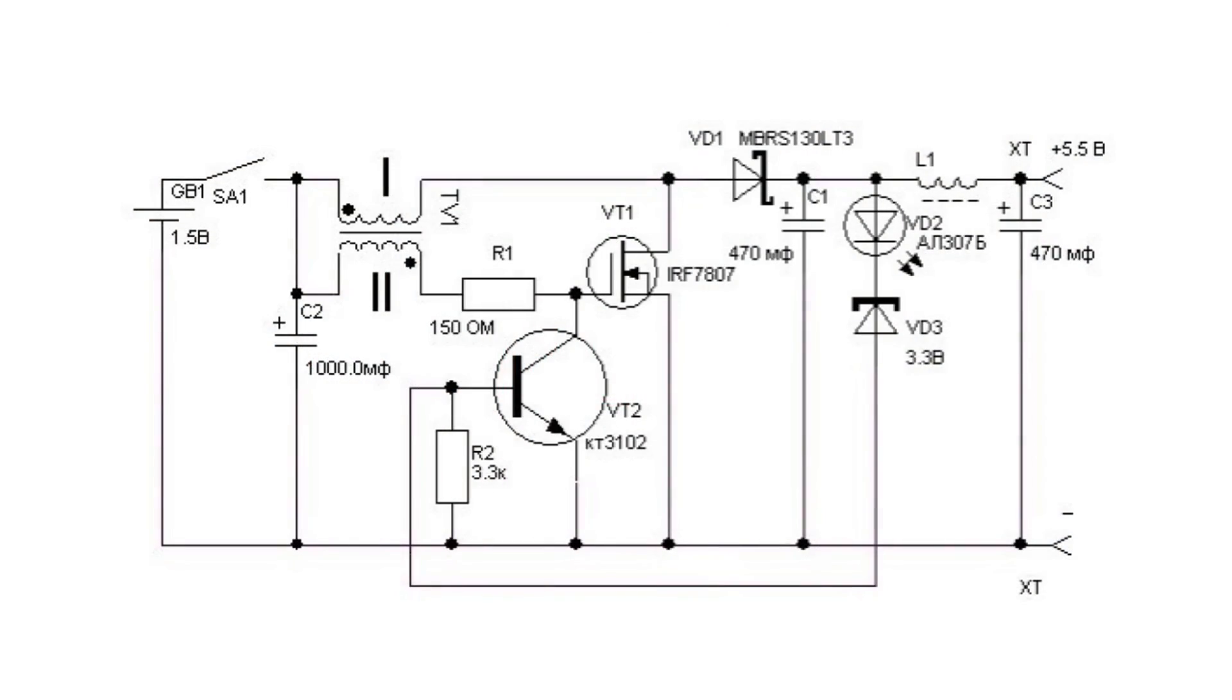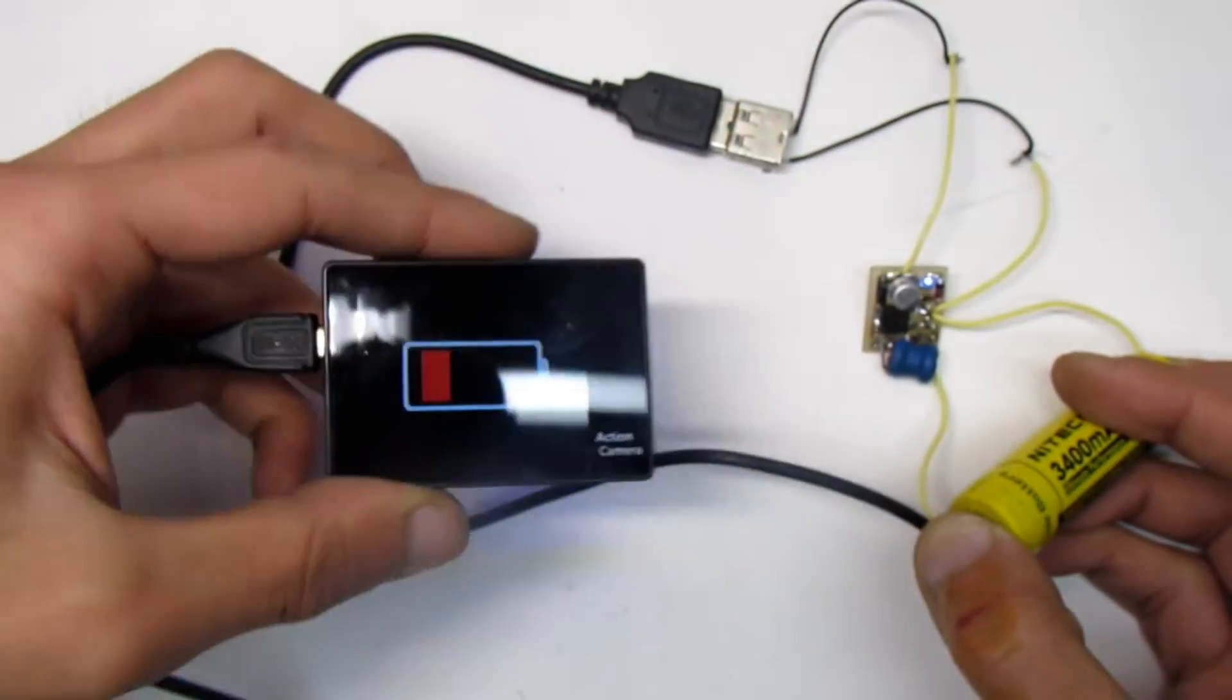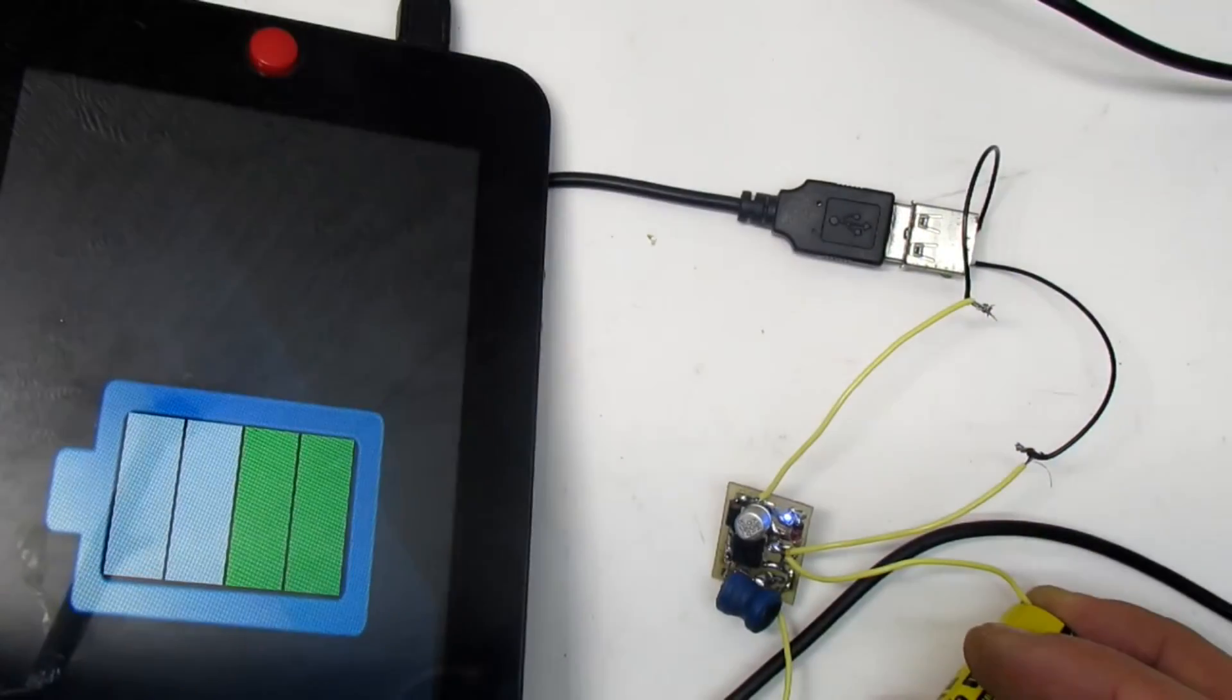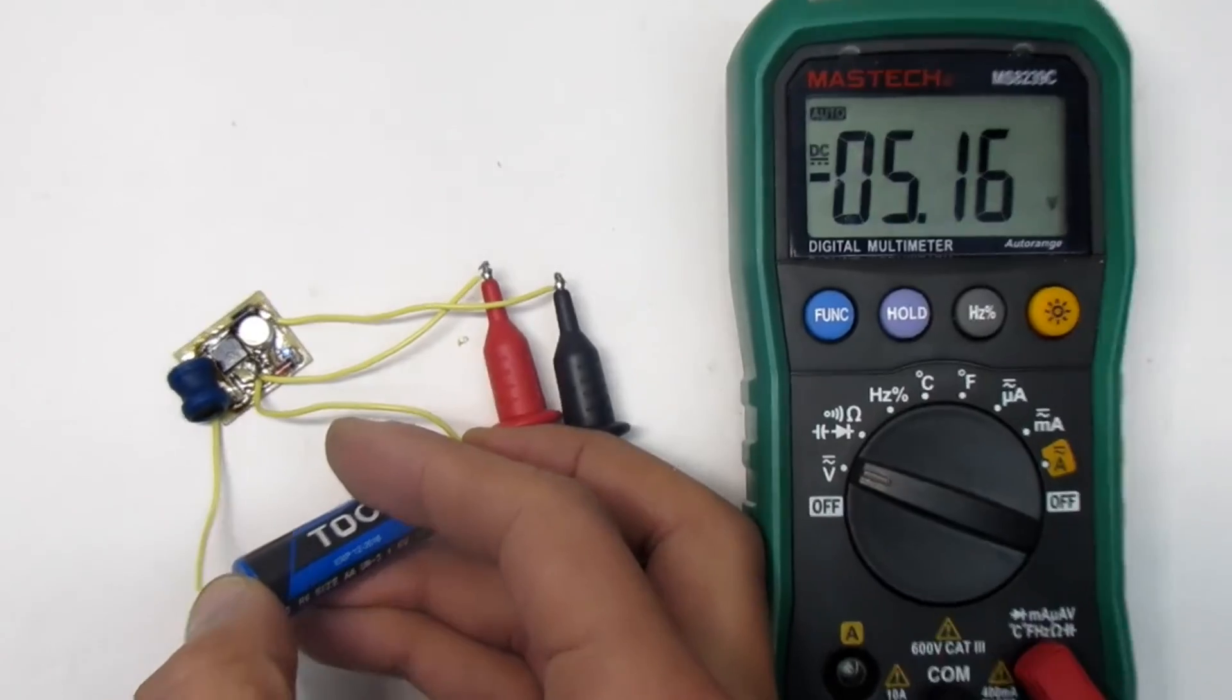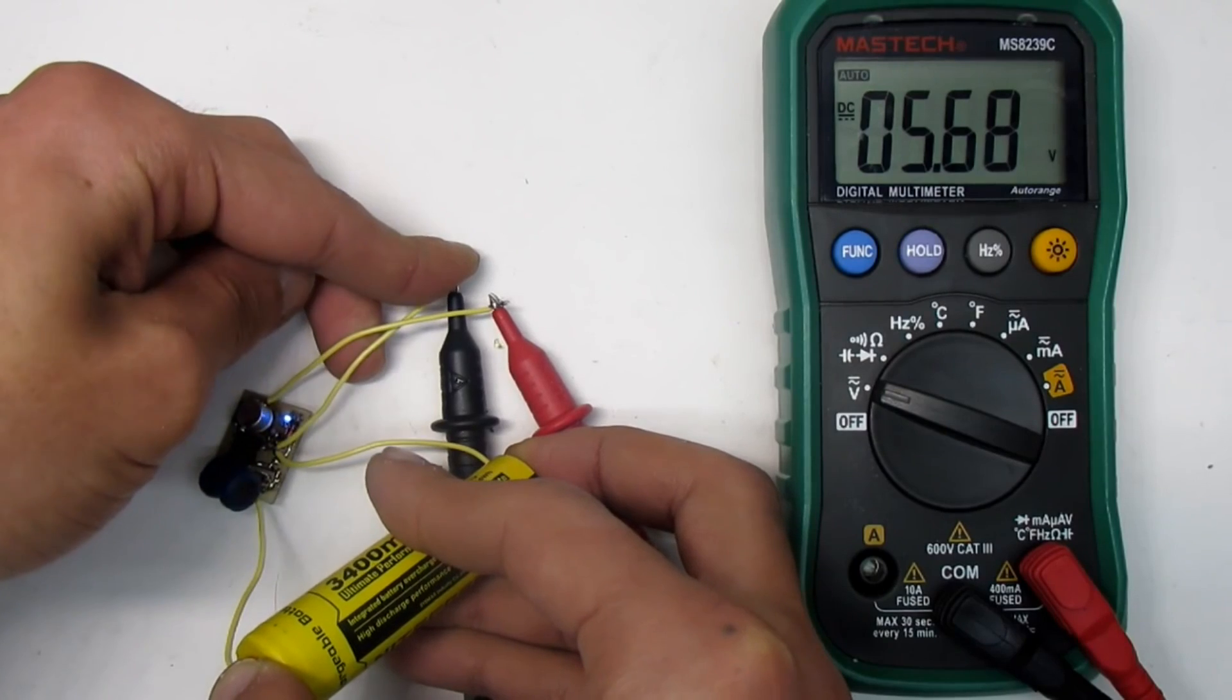The scheme is realized on the basis of a simple oscillator. It's a universal solution as a boost converter for charging any portable digital devices. The inverter can run from one battery of 1.5V or lithium battery of 3.7V.